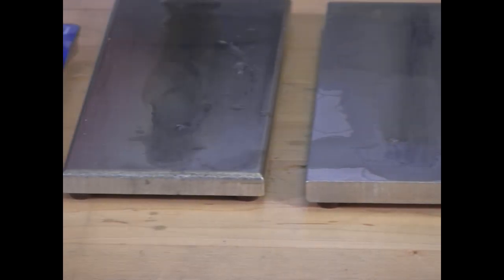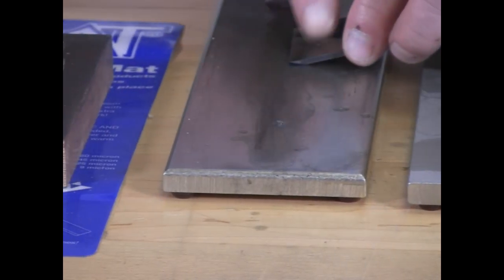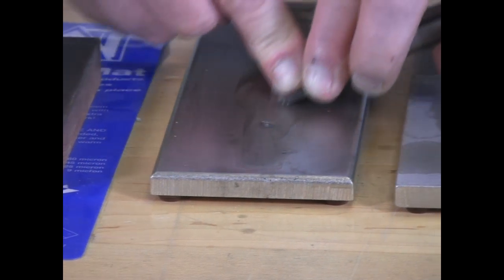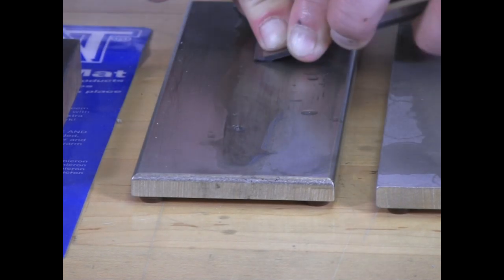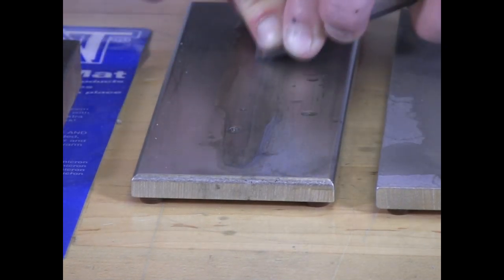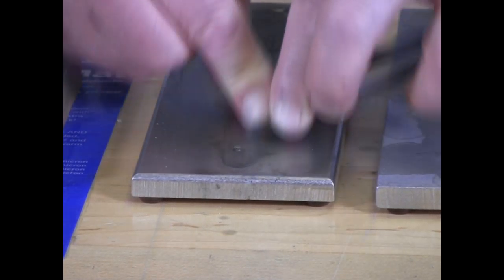And then we'll finish up on the 8,000 grit, 3 micron stone. This is really where you'll start to get the polish. And if you've rolled up a wire edge at this point, I'll show you how to take care of that in just a second before we go to the paste.